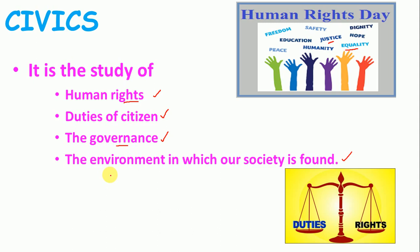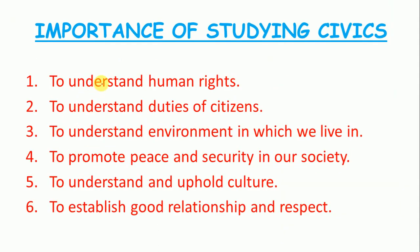The fourth point is the environment in which our society is found. The environment affects our politics and everything around us. The surrounding affects us, which is why we also study the environment in which our society is found in civics. So we have now understood all four points.